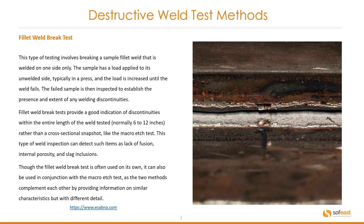The fillet weld break test involves breaking a sample fillet weld that is welded on one side only. The sample has a load applied to its unwelded side, typically in a press, and the load is increased until the weld fails. The failed sample is then inspected to establish the presence and extent of any weld discontinuities. Fillet weld break testing provides a good indication of discontinuities within the entire length of the weld tested, normally 6 to 12 inches, rather than a cross-sectional snapshot like the macro etch test.